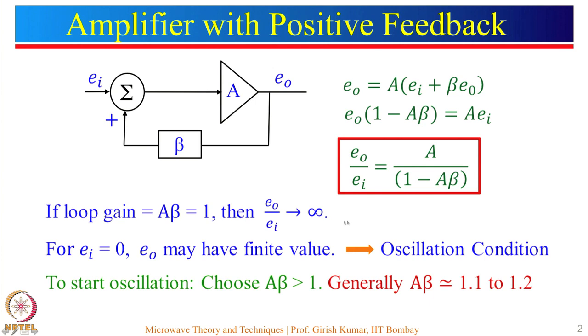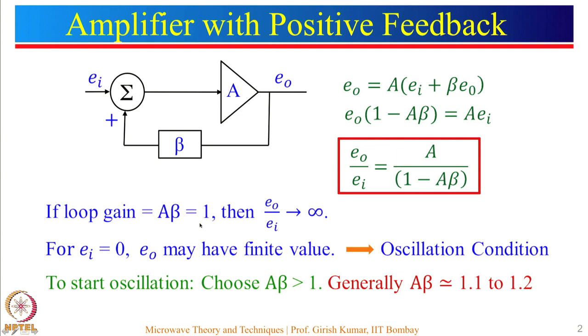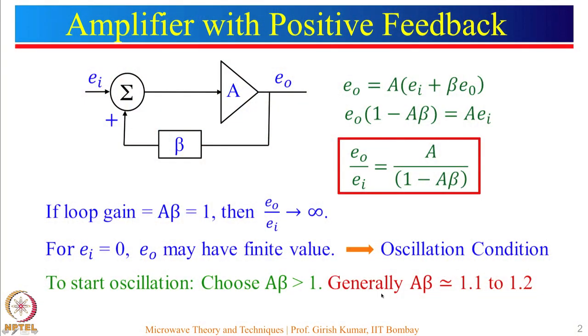For E_i equal to 0, E_0 may have a finite value which will be determined by the amplifier and the feedback network. So the oscillation condition is simply that the loop gain should be equal to 1. However, to start the oscillation, choose A·beta greater than 1. The question is how much greater — A·beta could be 1.001 or 10. I generally recommend choosing A·beta equal to 1.1 to 1.2. The reason will be obvious from the next slide.